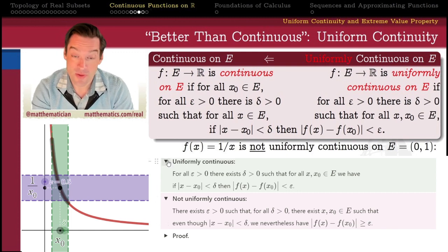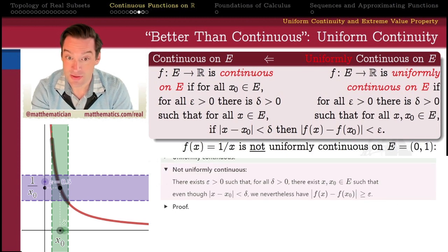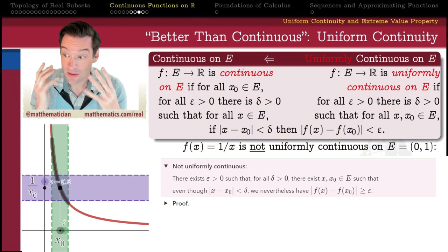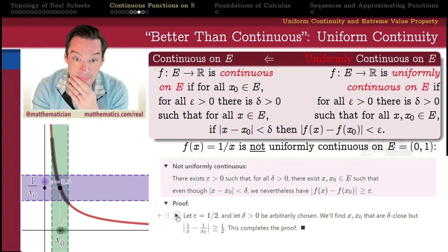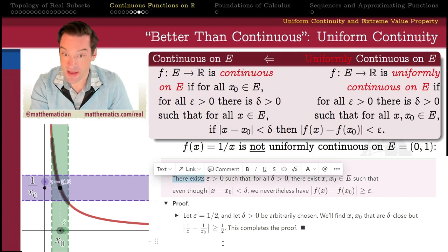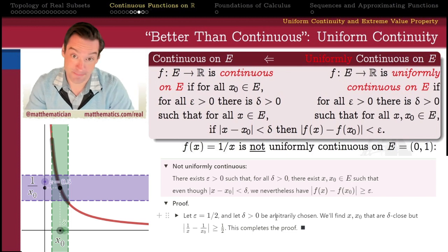Getting that definition adequately negated is probably one of the most challenging parts of writing a disproof of uniform continuity, so that we know what the burden of proof is. This is the definition of a function not being uniformly continuous that we're going to use. Structuring out a proof, the first thing in the quantifiers is 'there exists epsilon greater than zero.' This means I, as the author of this proof, have the freedom to pick a convenient epsilon.